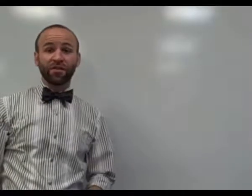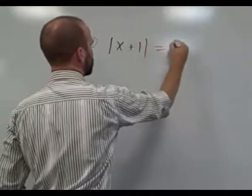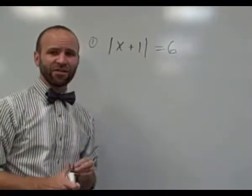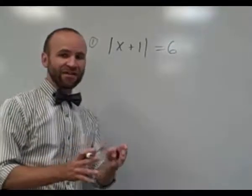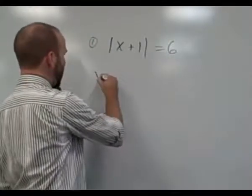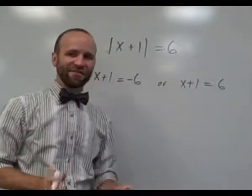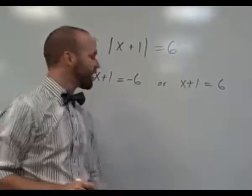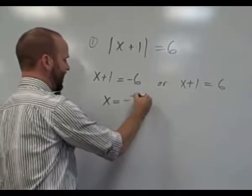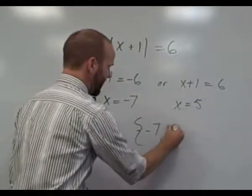Let's take a look at a few more examples. The first example is the absolute value of x plus one equals six. Here, x plus one represents a number, and the equation tells us it's exactly six units from zero. This leads to two possibilities: x plus one might be negative six, or x plus one might be positive six. Solving both equations by subtracting one from both sides gives x equals negative seven or x equals five. So the solution set is negative seven and five.